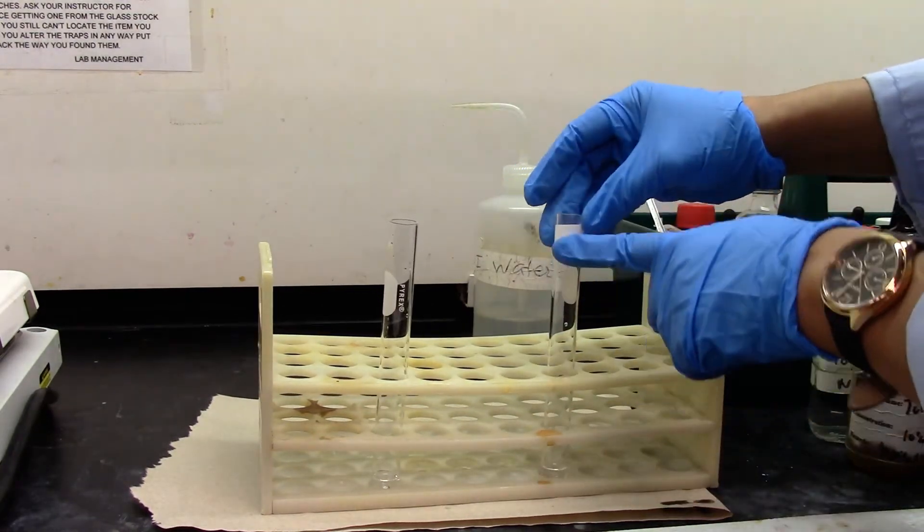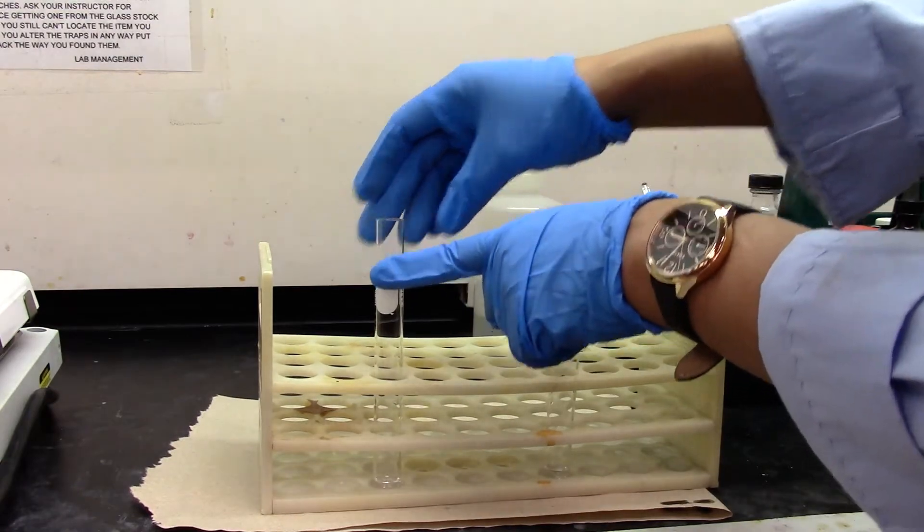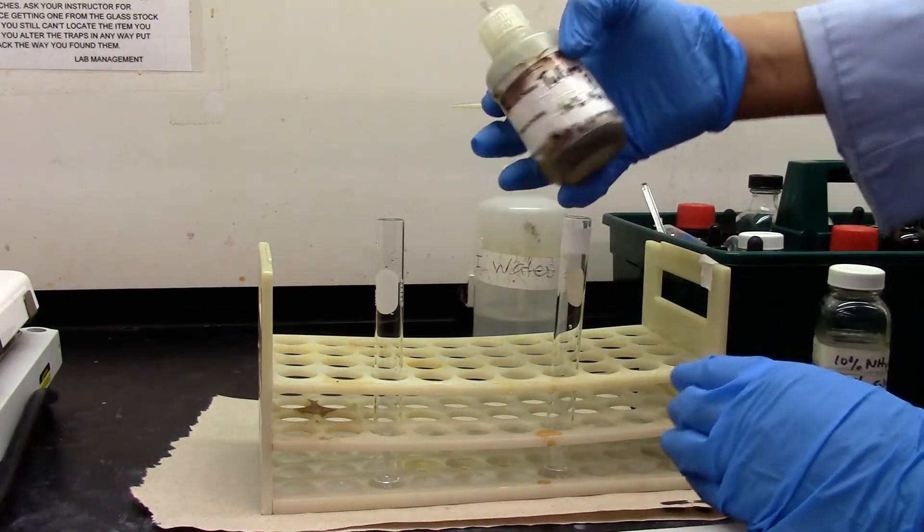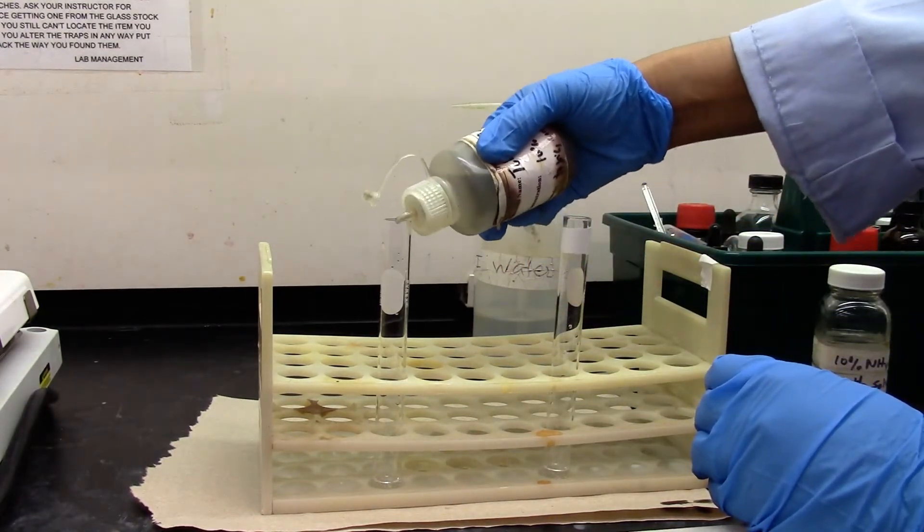This is our negative test. This will be our positive test. Next I am adding Tollen's reagent B, which is 10% sodium hydroxide.